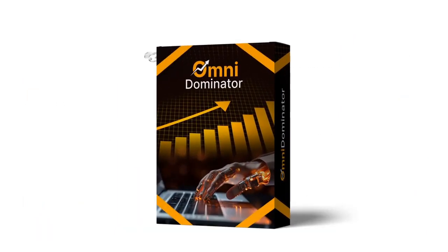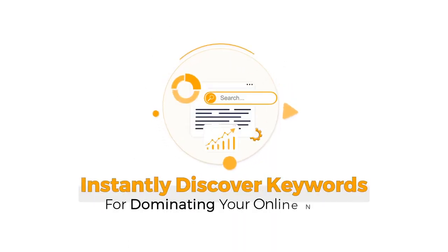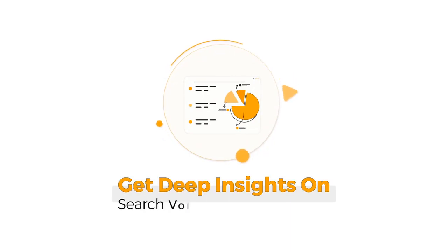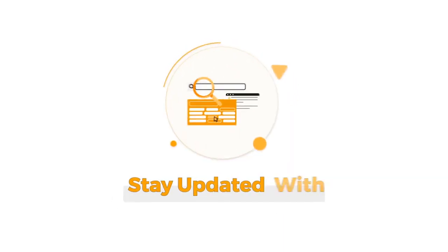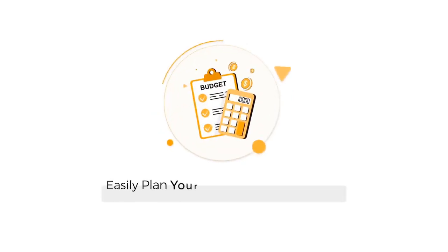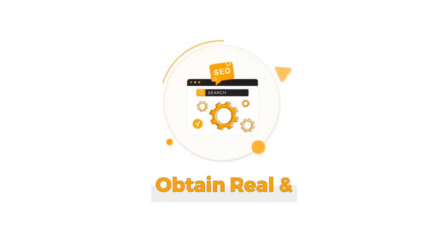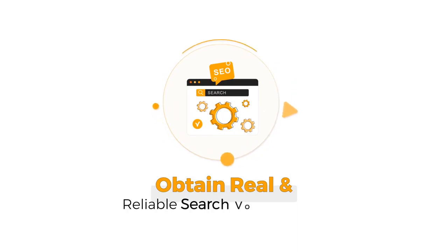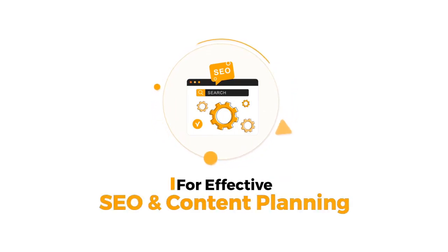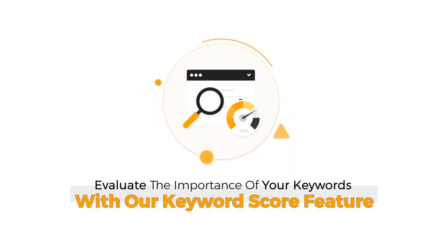With OmniDominator, you can instantly discover keywords for dominating your online niche. Get deep insights on search volume and competition. Stay updated with the latest keyword trends. Easily plan your ad budget by knowing the cost of each keyword. Obtain real and reliable search volume data for effective SEO and content planning. Evaluate the importance of your keywords with the keyword score feature.